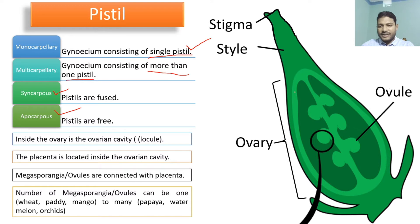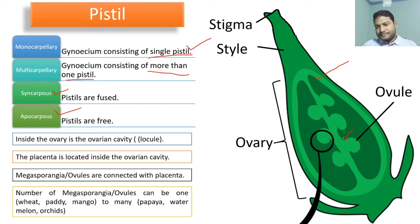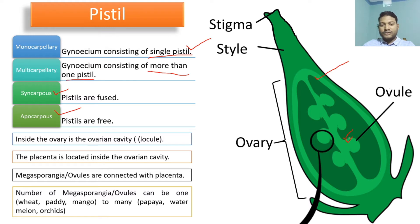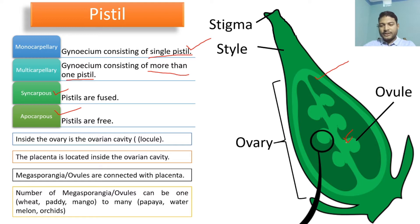Inside the ovary, there is a chamber called the ovarian locule or ovarian cavity. Inside this cavity, there are structures called the placenta, and to that placenta the megasporangia or ovules are connected. The number of megasporangia or ovules can be one in some cases like mango, or many in cases like watermelon and orchids.